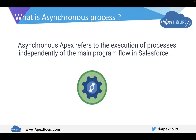So what we do is, using asynchronous Apex, we hold a few of the processes which are not urgent to execute. We just hold those processes and run them in the background. Running in the background means those processes will get run whenever they have all the resources available.